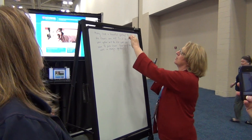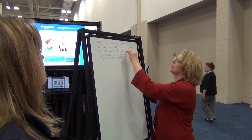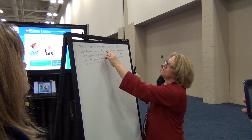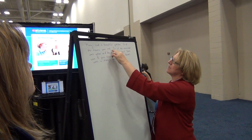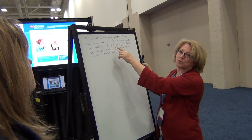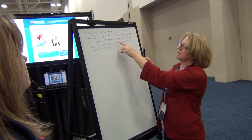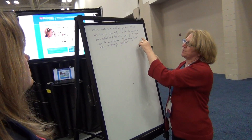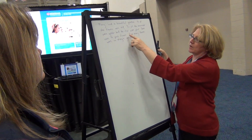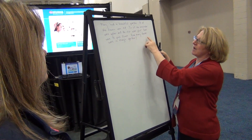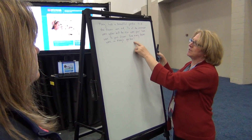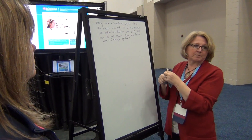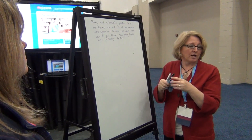Mary had a beautiful garden. One-fourth of the flowers were red, two-fifths of the remainder were yellow, and the rest were pink. There were 18 pink flowers. How many flowers were in Mary's garden?